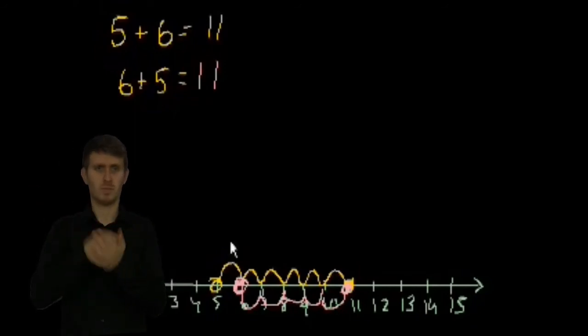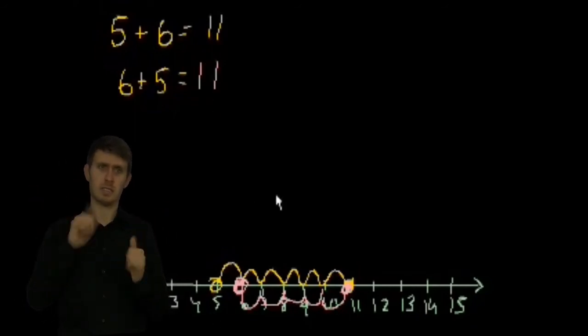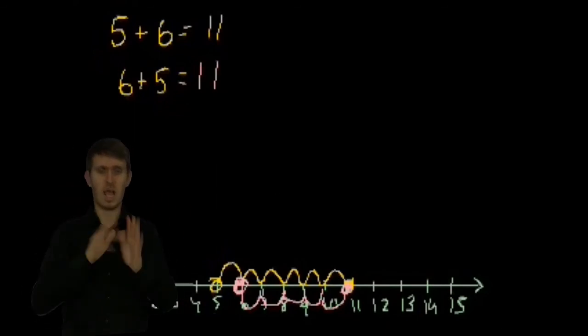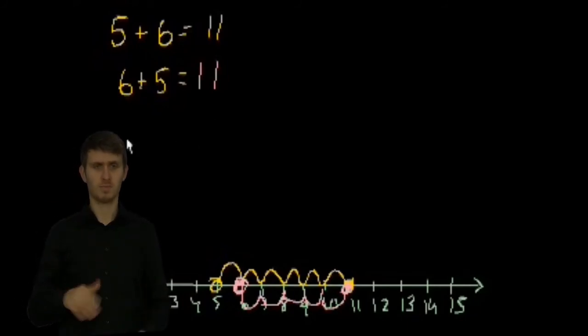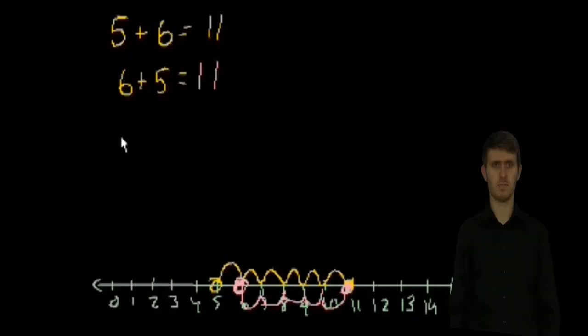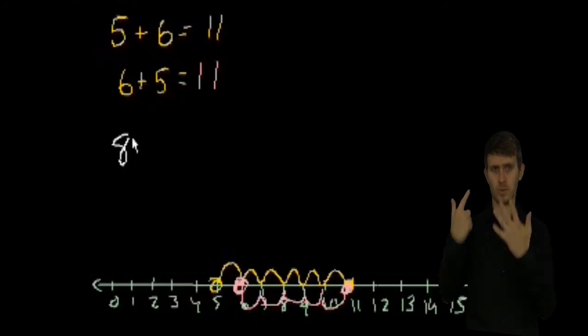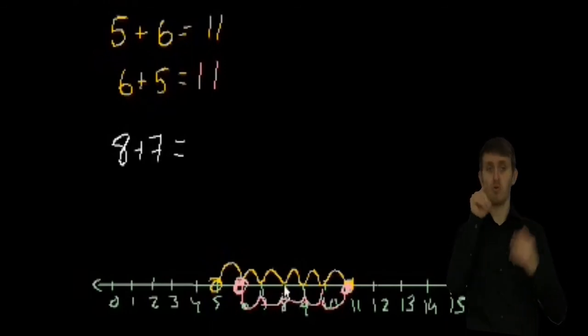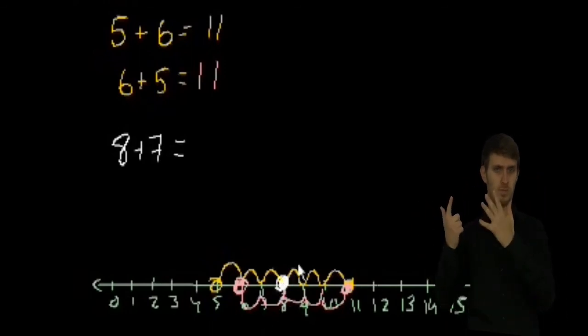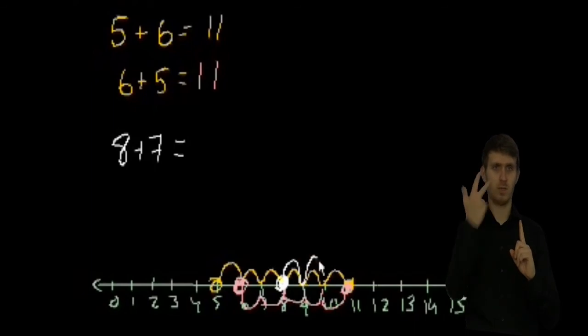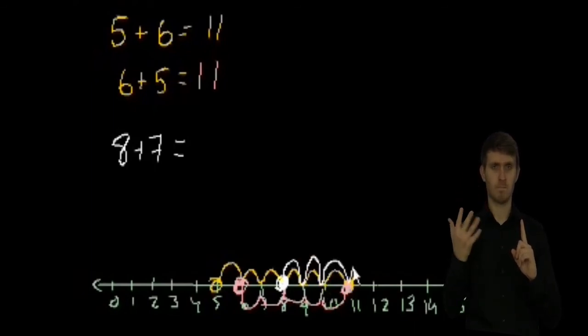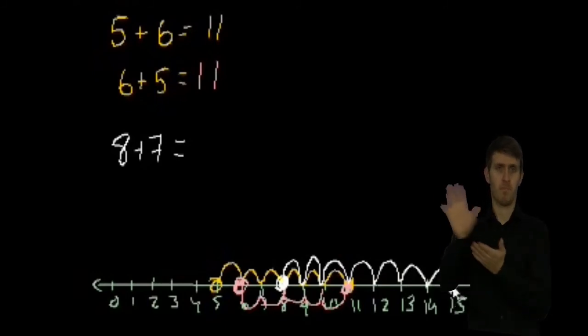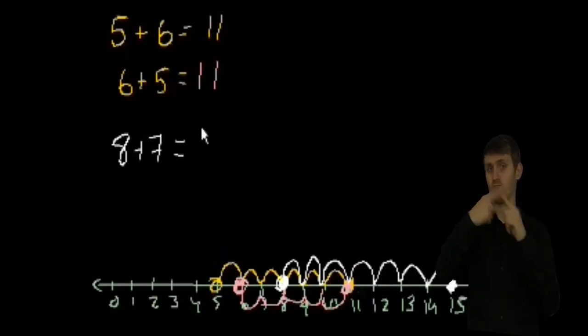Let's do a couple more, since this number line is so nice, I want to do a few more problems using it. Although, as I use it, I'm sure I'll just continue to confuse you because I'll write so much on top of it. But let's see. I'll use white now. What is 8 plus 7? Well, if you can still read this, 8 is right here, right? We're going to add 7 to it. 1, 2, 3, 4, 5, 6, 7. And then we go to 15. 8 plus 7 is 15.